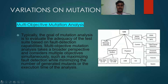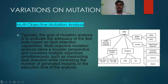The last variation is multi-objective mutation analysis. Typically, the goal of mutation analysis is to evaluate the adequacy of a test suite based on fault detection capabilities. Multi-objective mutation analysis takes a broader perspective and considers multiple objectives simultaneously — such as maximizing fault detection while minimizing the number of generated mutants or the execution time. This is illustrated in the basic diagram of multi-objective mutation analysis. Thank you for watching.